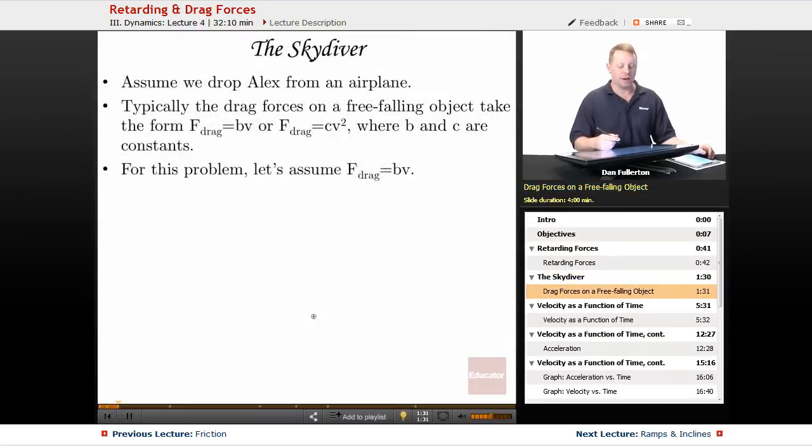Alright, so let's start by talking about a skydiver. Assume we drop our dear friend Alex from an airplane. Typically the drag forces on a free falling object take the form where the force of drag is some constant times the velocity or a constant times the square of velocity or sometimes even something in between that, but where b and c are constants. For the purposes of this problem, let's assume that the drag force is equal to a constant times the velocity.